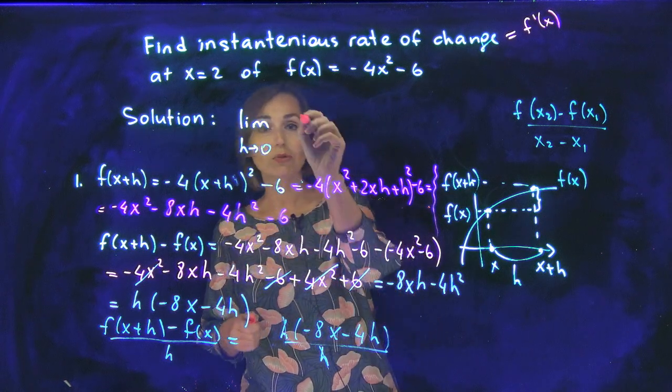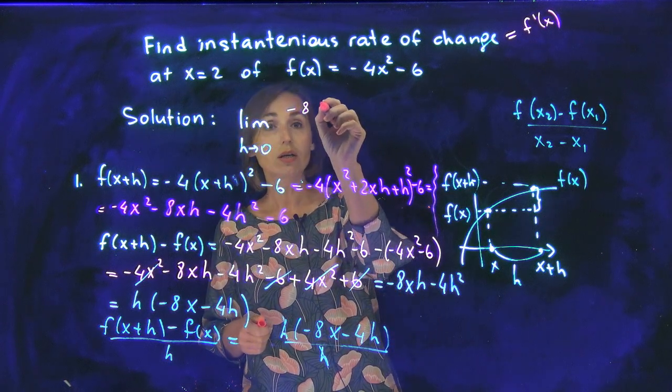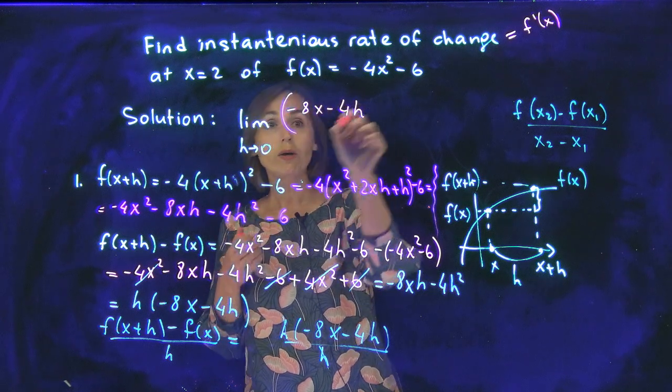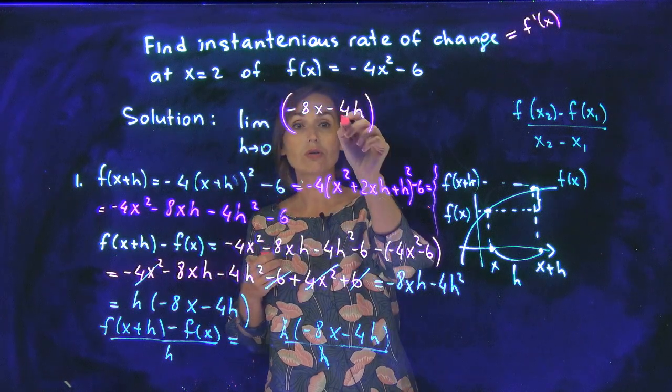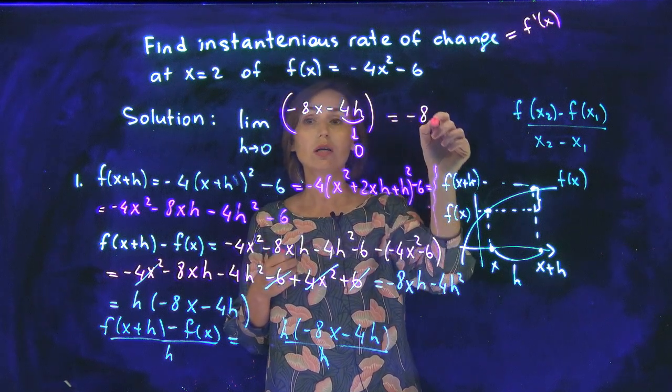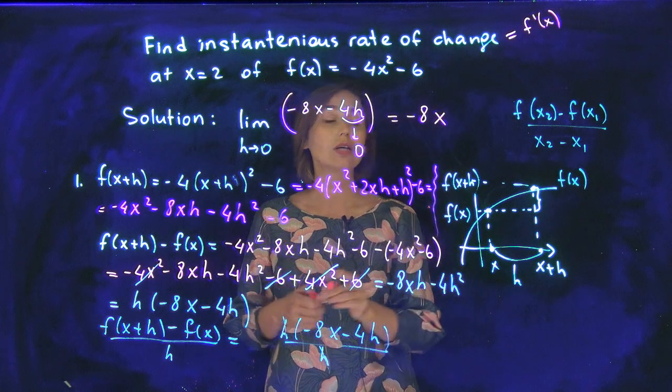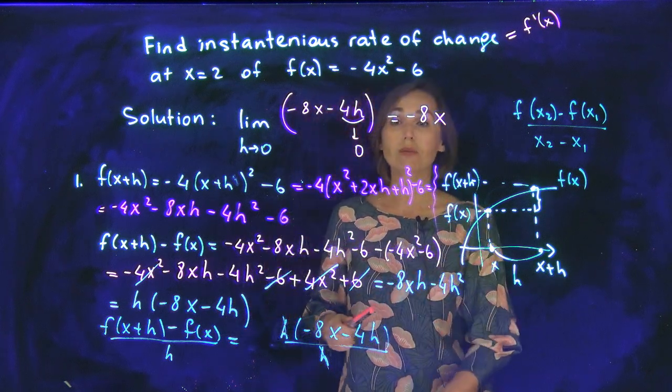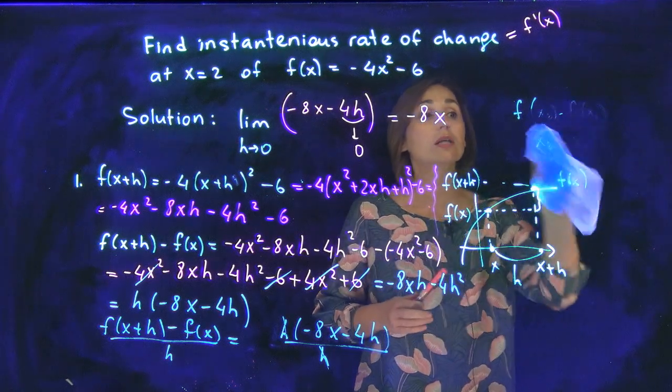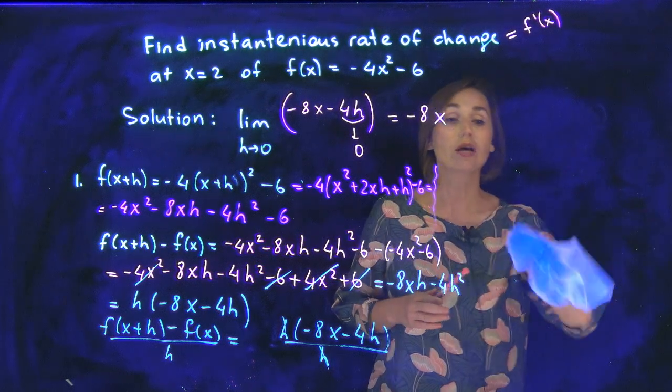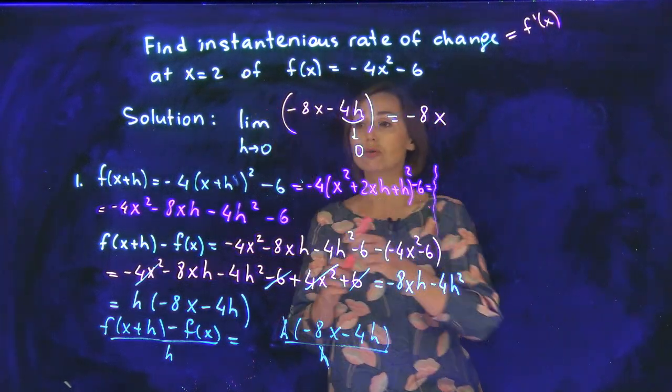So I will get limit of negative 8x minus 4h when h approaches to the 0. If h approaches to the 0, this guy goes to 0. And the whole limit will be negative 8 times x. And this is derivative of the function. So you find derivative. The only thing that is left is evaluate this derivative at x equals 2.